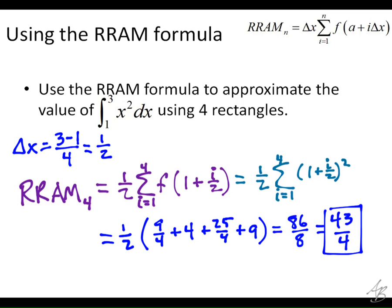How accurate do you think this is? Probably not very. We only use four rectangles. Is this going to be an over-approximation or an under-approximation? Over. So x squared from 1 to 3 is going to be increasing, right? So if we're using right rectangles, the right end point is going to be higher than the left end point, so it's going to be an over-approximation.